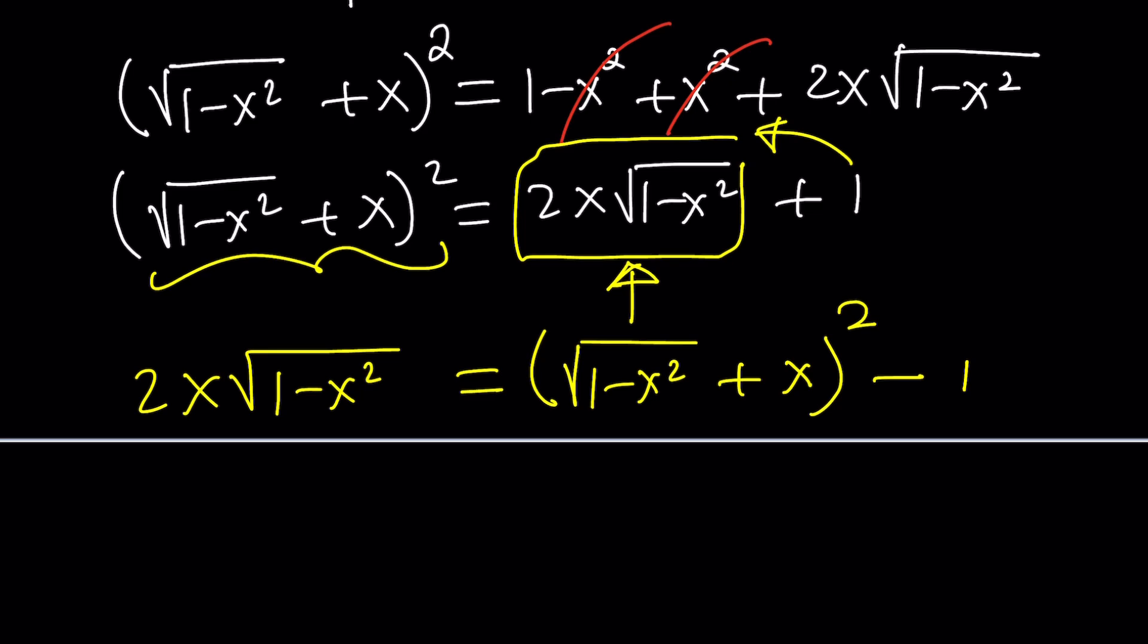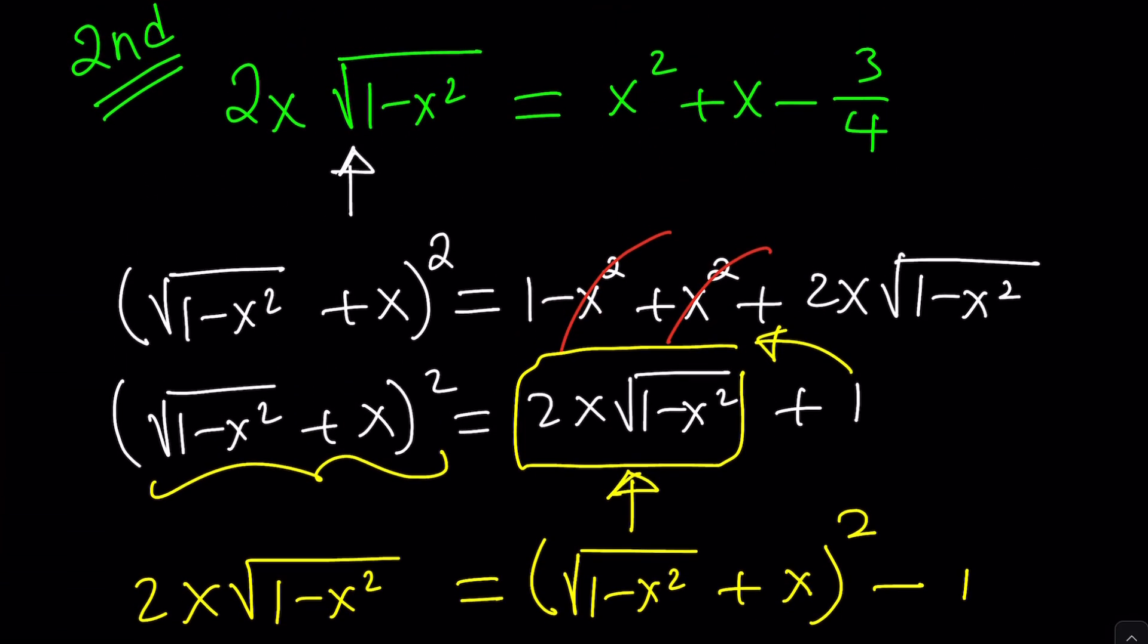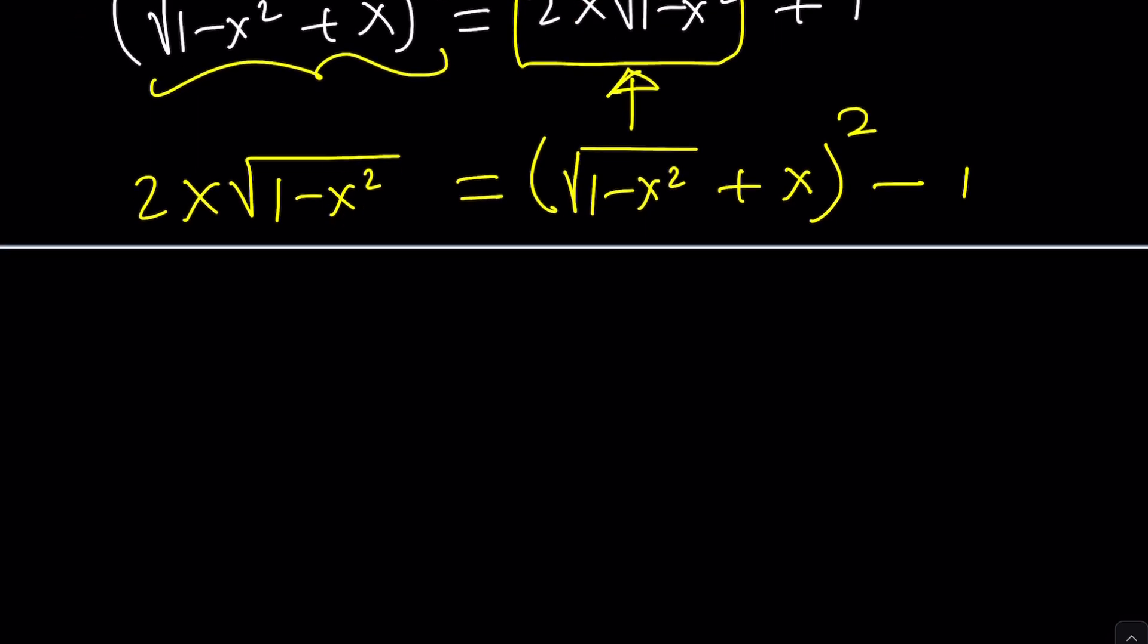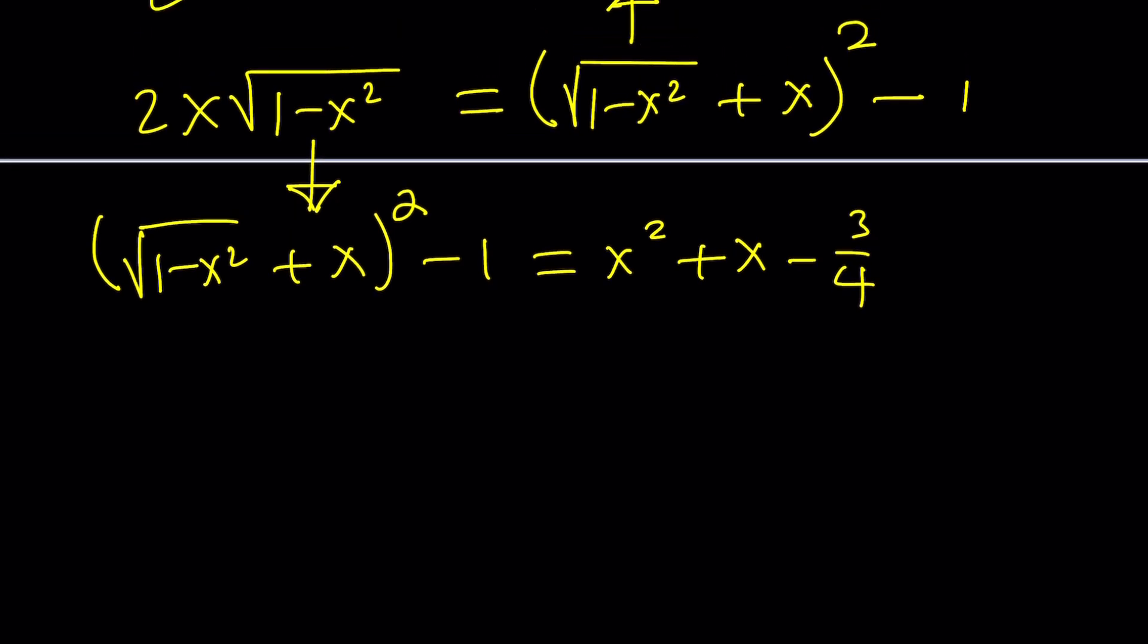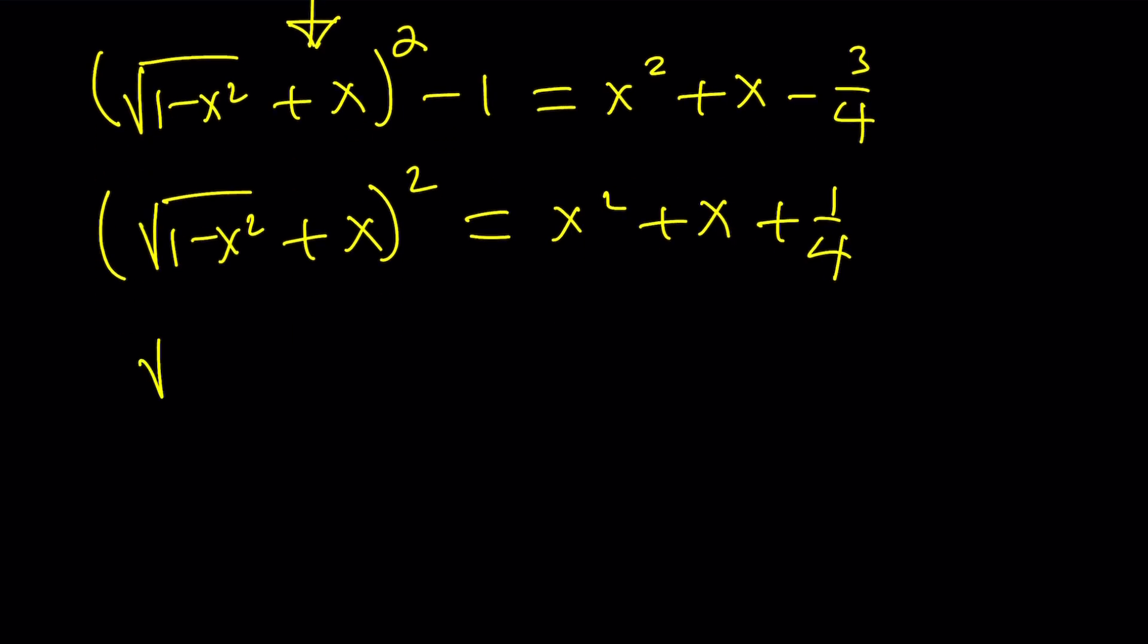Now let's go ahead and replace the radical on the left with this. So we get square root of 1 minus x squared plus x quantity squared minus 1 equals x squared plus x minus 3 fourths, which was on the right-hand side. Remember, there was the radical on the left-hand side. We replaced it with this perfect square minus 1. And then on the right-hand side, we had the quadratic. If this is not good enough, let's add 1 to both sides. And then we get x squared plus x plus 1 minus 3 fourths, which is 1 fourth. And now we can write the right-hand side as x plus 1 half squared. Very nice, right?